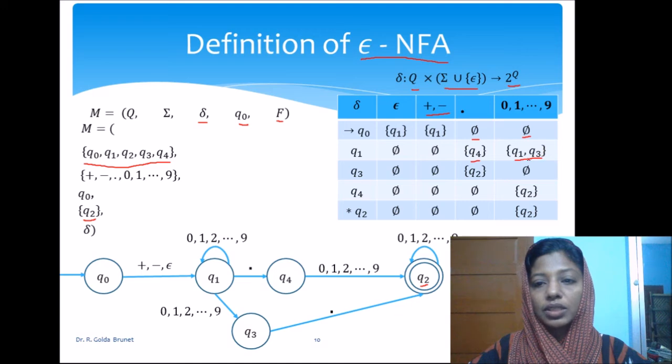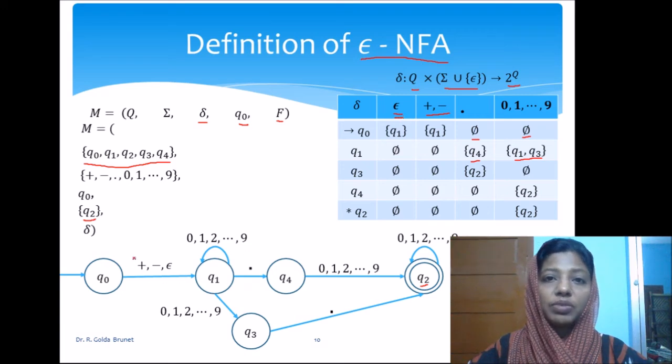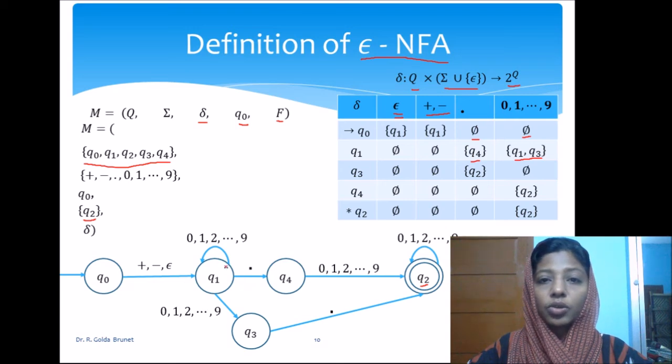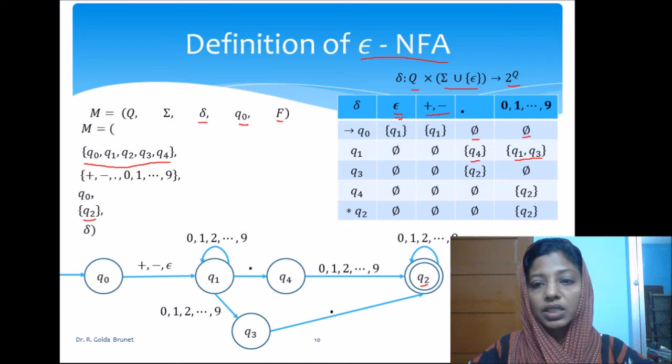This is one more non-determinism that we have. So, these are the non-determinism that we have in this machine. One is including the transition on null string. Because without even accepting any input, we can be in more than one state. In the beginning, either I can be in Q0 or without accepting anything, I can be at Q1. So, this is one non-determinism that we have.